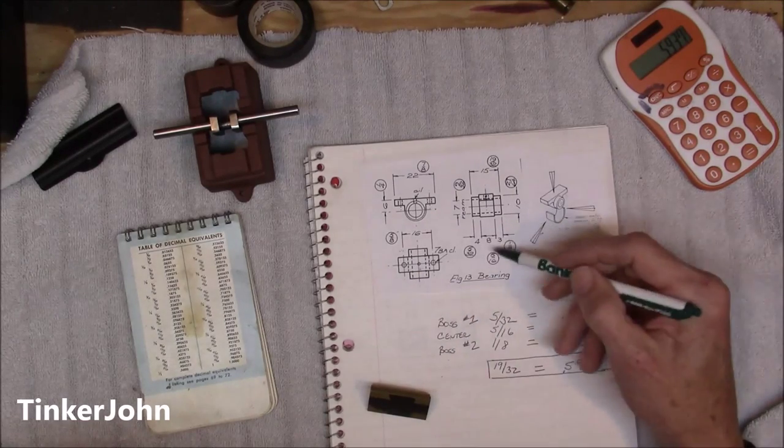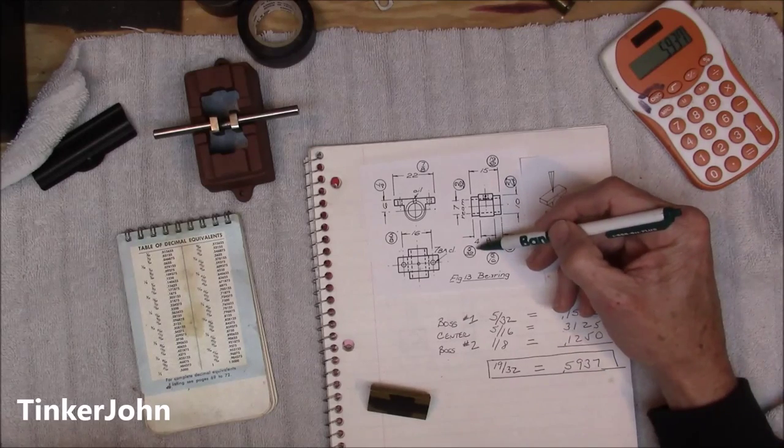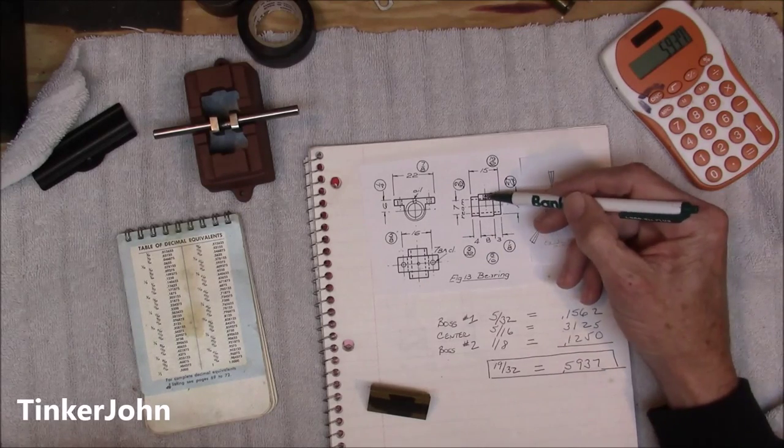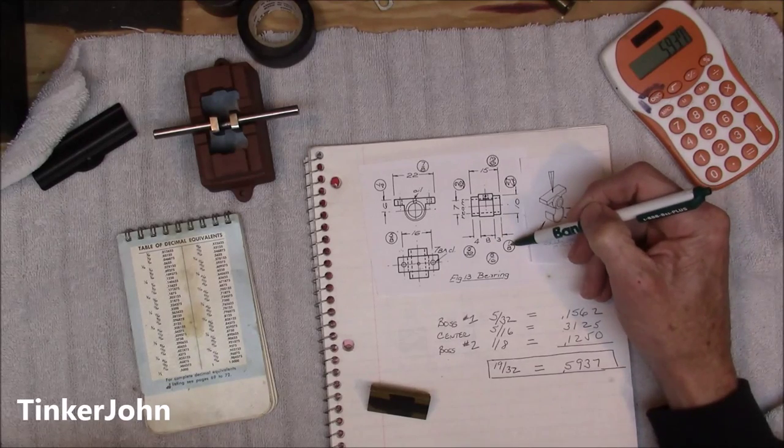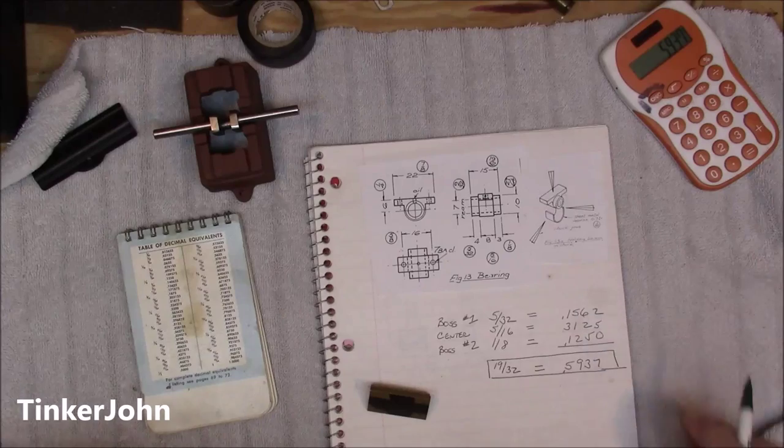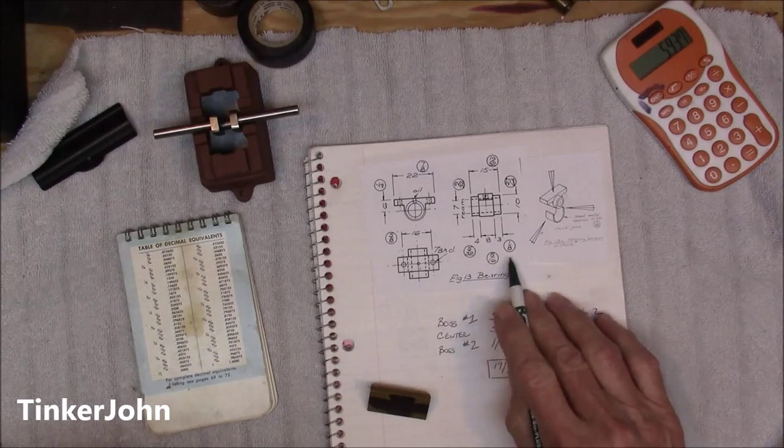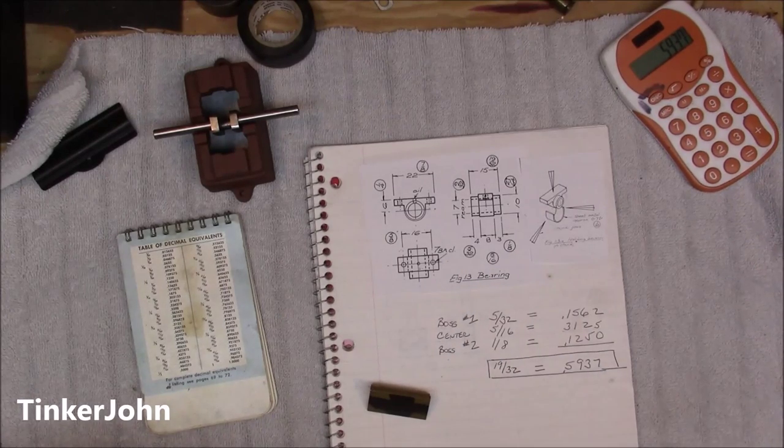The bearing measurements are: one side of that boss is 5/32, the other boss is 5/16, and this one is 1/8 of an inch. If you add those up together, 5/32, 5/16, and 1/8, convert those to decimal...